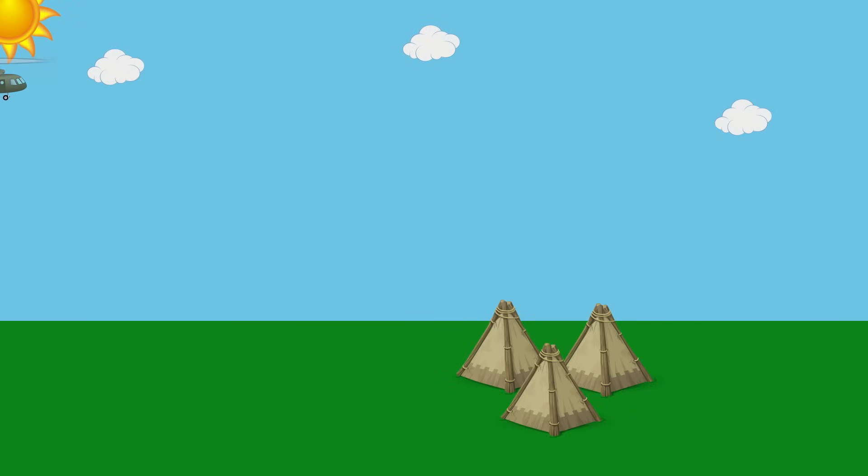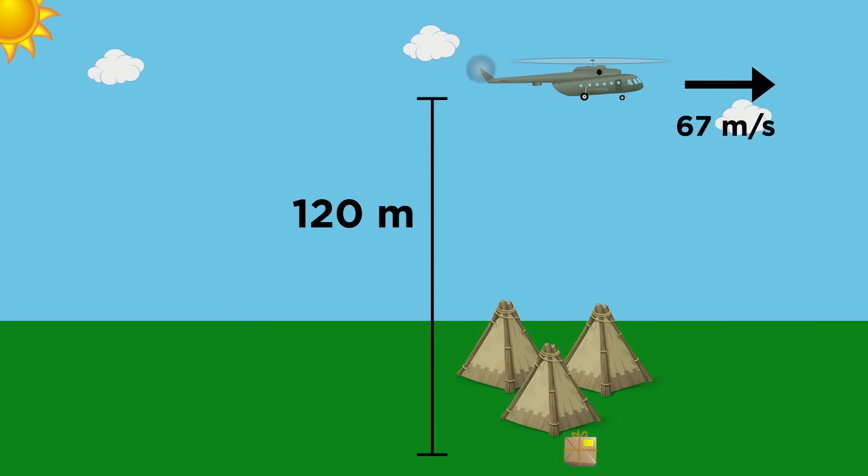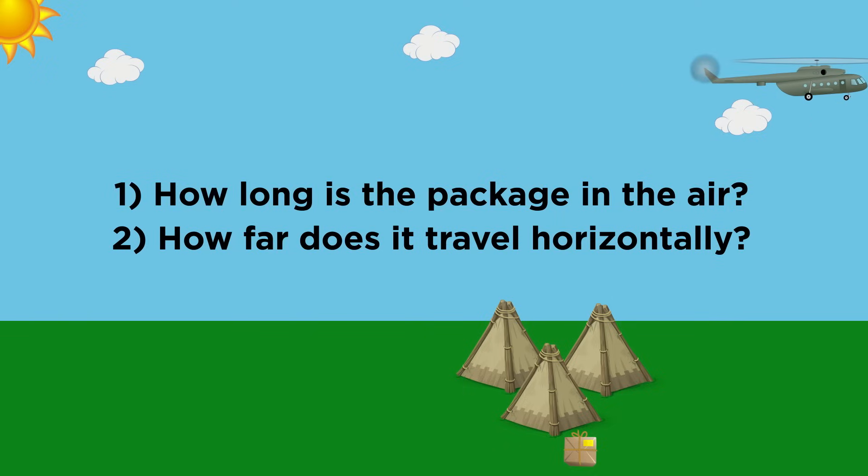Let's try one more. Say a helicopter is delivering a care package to a remote location. The helicopter is traveling horizontally at 67 meters per second, and is at a height of 120 meters when the package is dropped. How long before the package hits the ground, and how far will it travel in the horizontal direction?